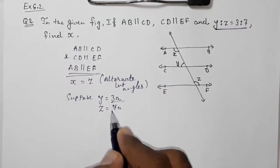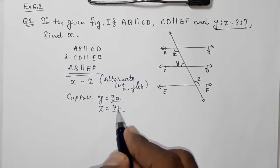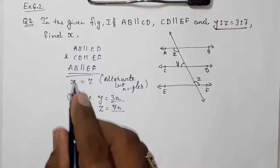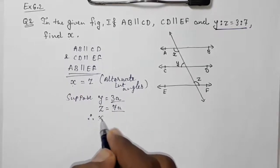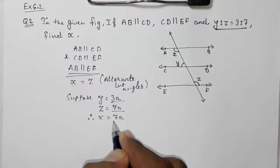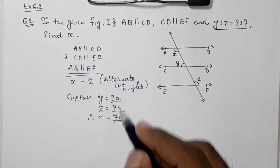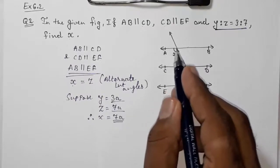Now Z is 7A, therefore X also equals to 7A because these two are equal as we have proved. Now X and Y we can see are forming the same side of the transversal.